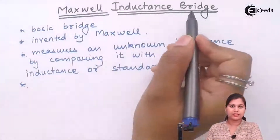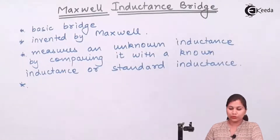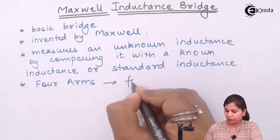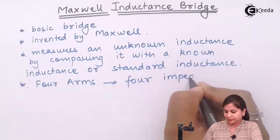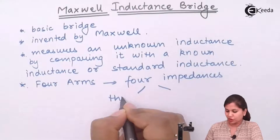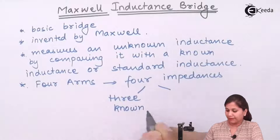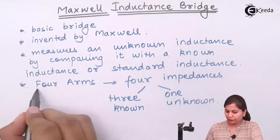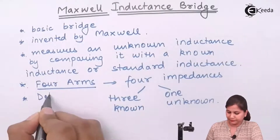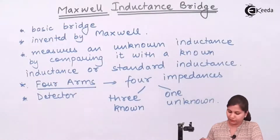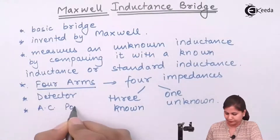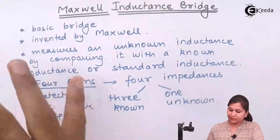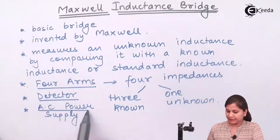This Maxwell inductance bridge is a type of alternating current bridge, so it is also going to consist of four arms. Any bridge circuit consists of four arms. In those four arms, four impedances are connected. Out of those four impedances, three impedances are known to us and there is one unknown impedance. In that bridge we will have four arms, a detector for detecting the balance condition of the bridge, and also an AC power supply. This power supply is used to operate the bridge circuit.